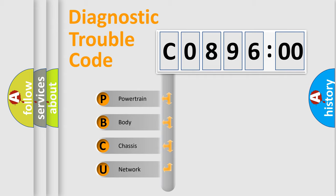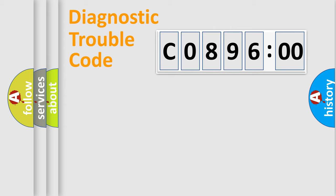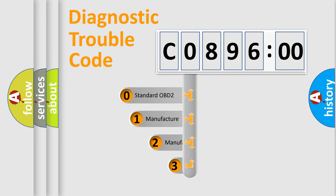We divide the electric system of automobile into the four basic units: Powertrain, Body, Chassis, and Network. This distribution is defined in the first character code.